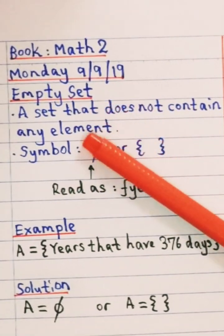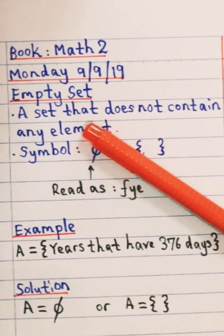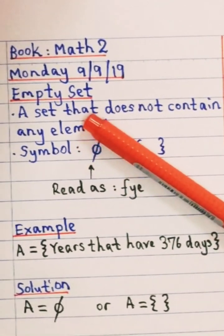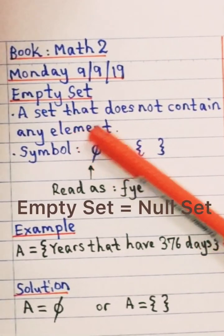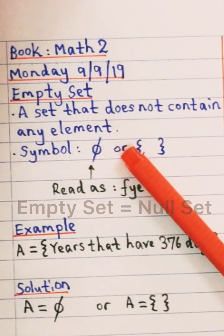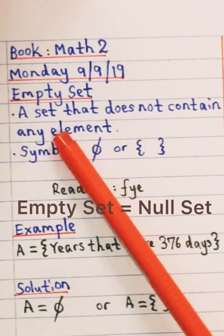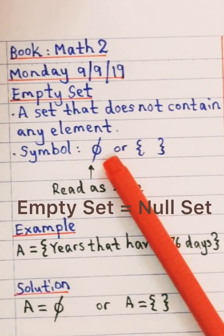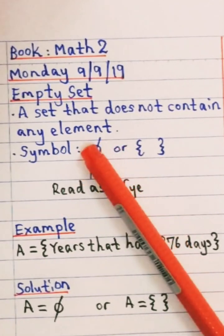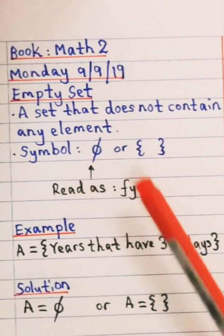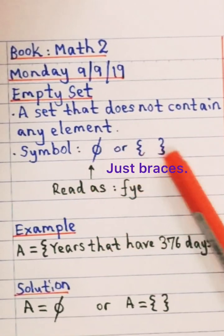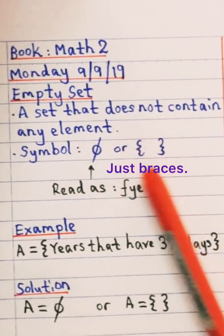So for today's lesson, we're gonna learn empty set. So let me define you, what's the definition of empty set? Empty set is a set that does not contain any element. So the symbol that we use to represent empty set is Phi. So this is the symbol for Phi, which is you draw a circle and then you just do a slash there. Or you can have only braces without any element in between.